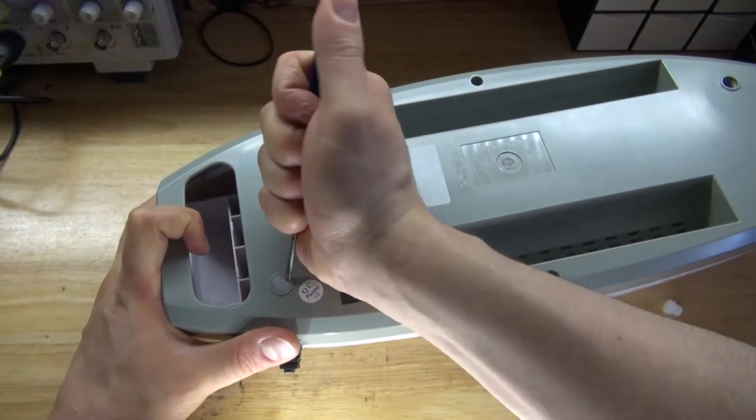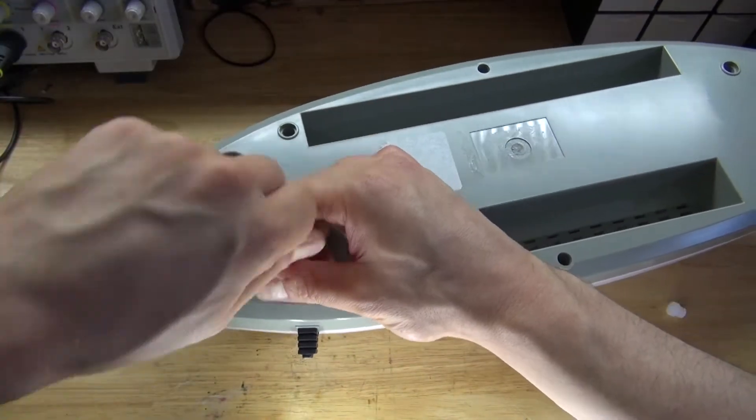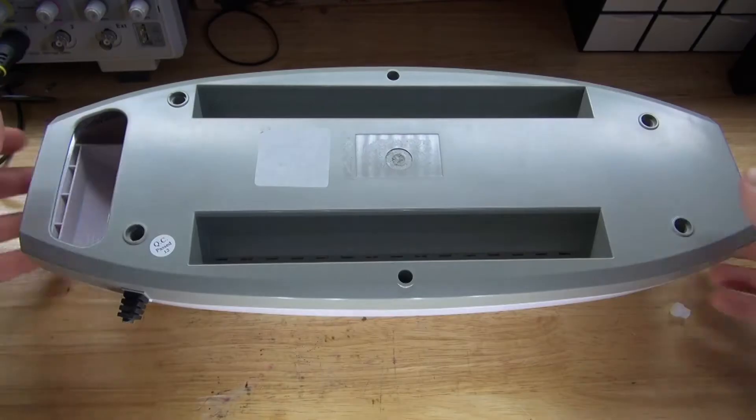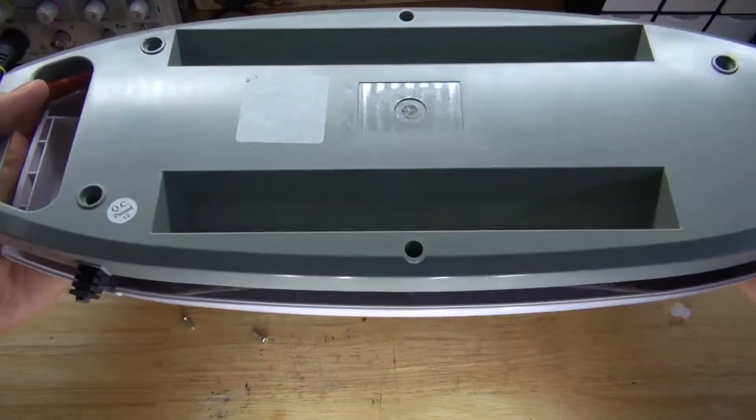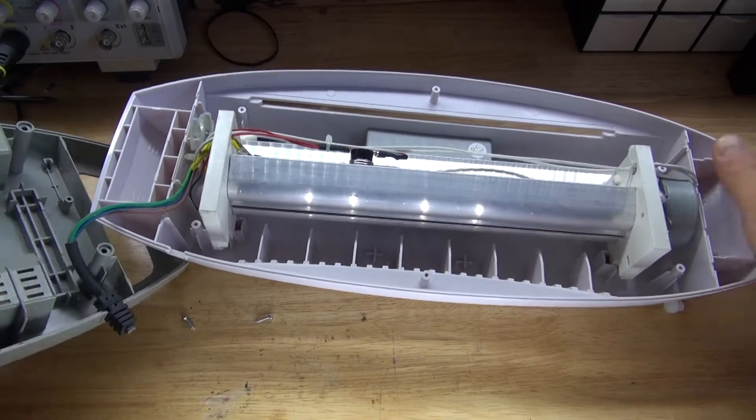Next I need to remove all of the screws which will then allow me to open the housing. And there I've loosened all the screws and now I can turn it over and dump them out. And now I can remove the housing and there that's what's inside.